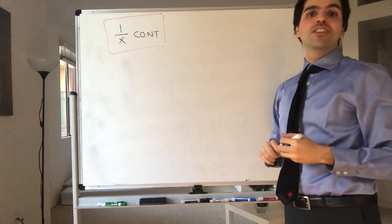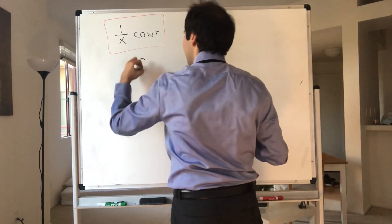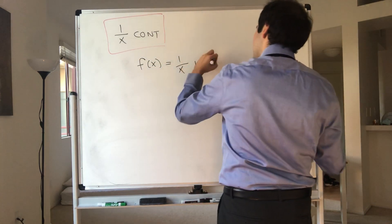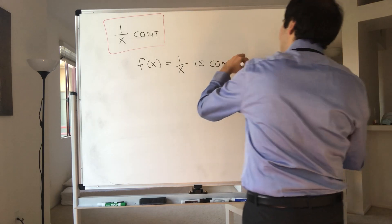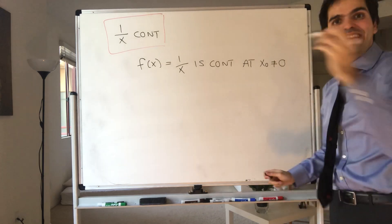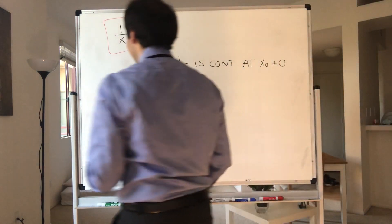All right, thanks for watching. Today I'm going to show that the function f(x) equals one over x is continuous. Let's say continuous at x naught, which is non-zero. It's not defined at zero, so it would be silly to show it's continuous there.